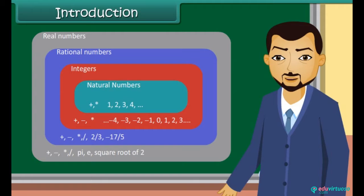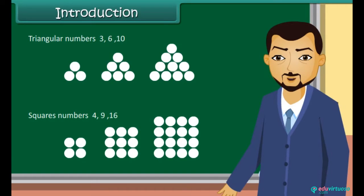Introduction. We have studied types of numbers such as natural numbers, whole numbers, integers and rational numbers. In this chapter we will explore numbers in more detail. Triangular numbers: 3, 6, 10. Square numbers: 4, 9, 16.